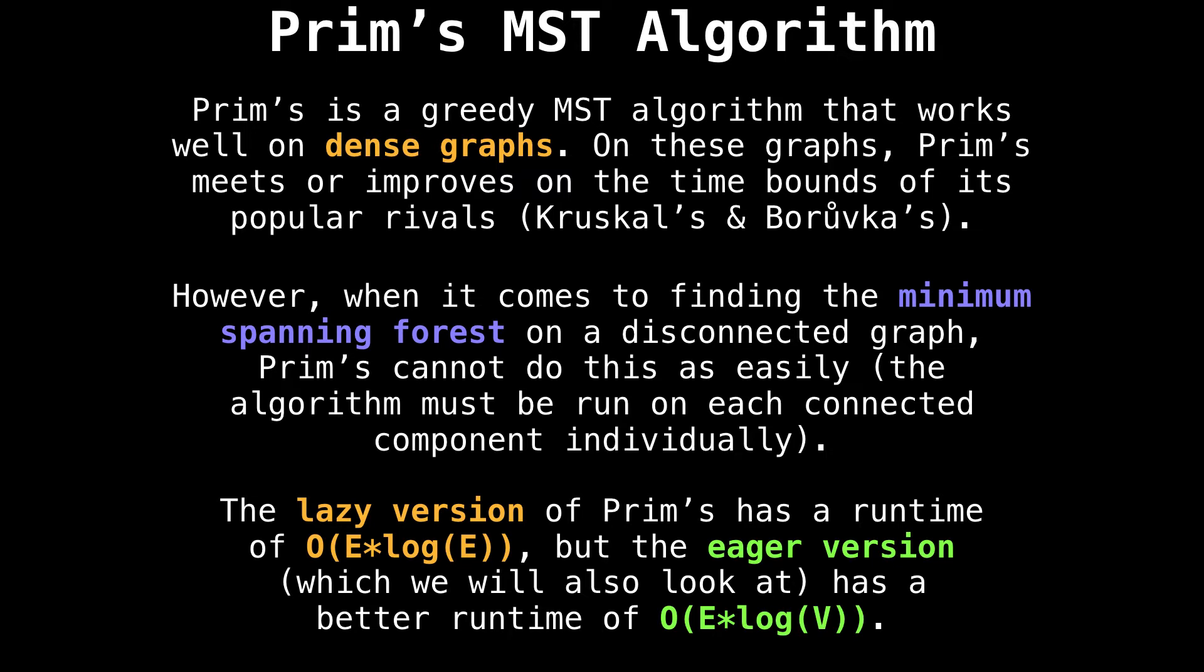There are two well-known versions of Prim's I want to discuss. The first is the common lazy version, which runs in big O of E log E. And then there's the improved eager version which runs in big O of E log V, but requires a slightly different data structure. We're going to have a look at both, but this video is primarily going to focus on the lazy version.